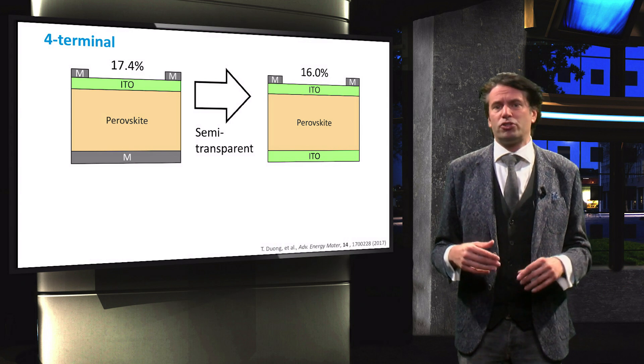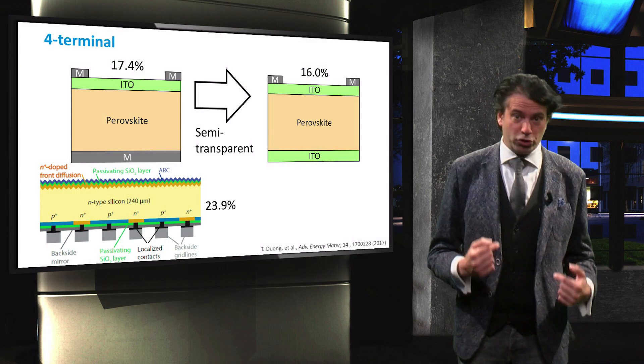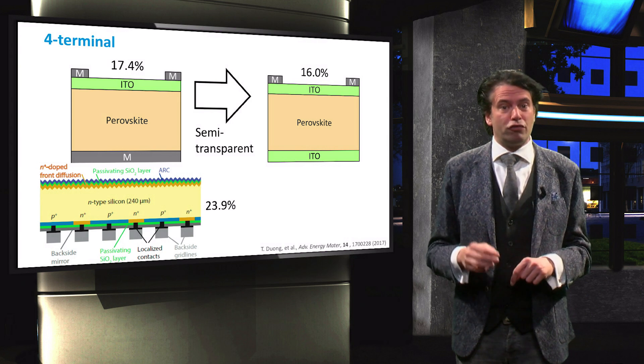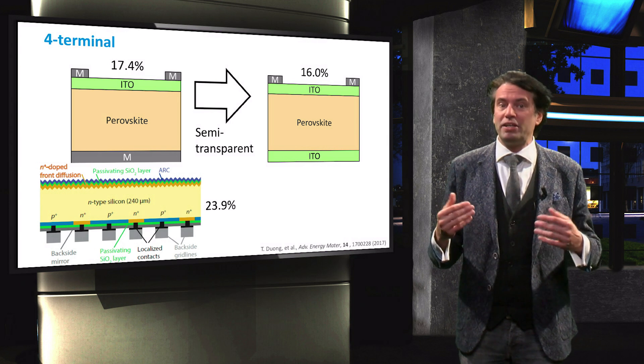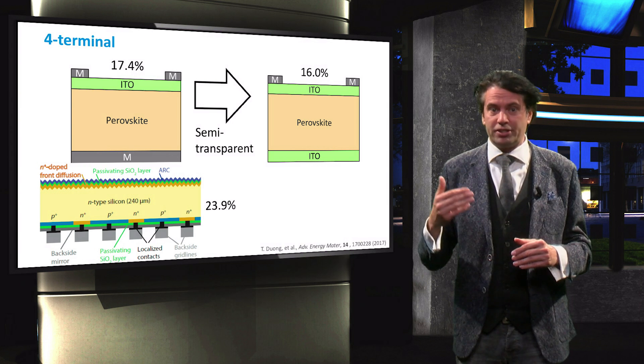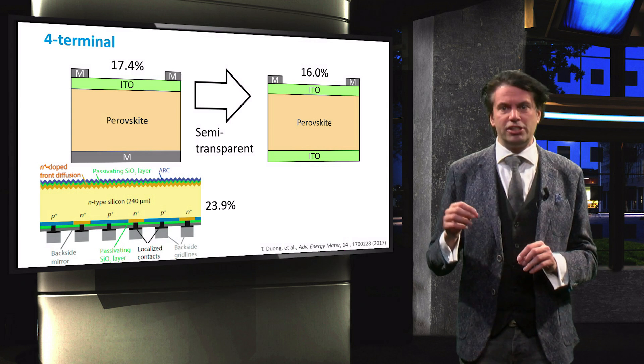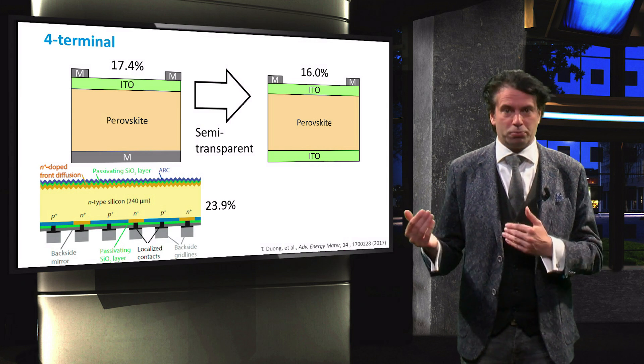The resulting semi-transparent top cell has an efficiency of 16%. As bottom cell, an IBC crystalline silicon cell was used with an efficiency of 23.9%. This cell has not been adapted for use in the four-terminal tandem yet. The only addition was a silicon gel on the top of the IBC cell to improve the optical coupling between the top and bottom cell.